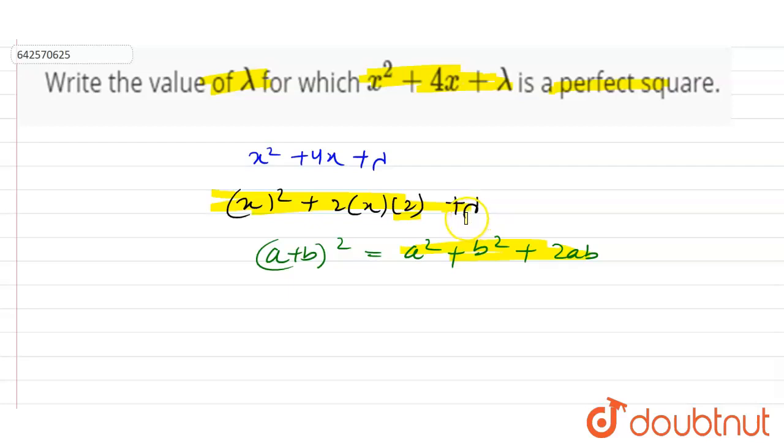We have to find the value of λ which is in the place of b². If we add the square of 2 in the equation, this can be written as (x + 2)².